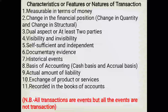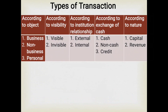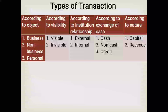In summary, all transactions are events but not all events are transactions. Now we can go to the types of transaction. There are five type categories. Number one, according to object, there are three types: business transaction, non-business transaction, and personal transaction.